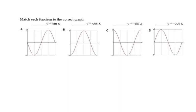For y equals sine x, we know that when x equals zero, y should be zero. So it passes through zero zero, which means this one or this one. Then for pi over two, it should be one. That's definitely D. For y equals negative sine x, it will be reflected across the x-axis from y equals sine x. Therefore, that will be A.